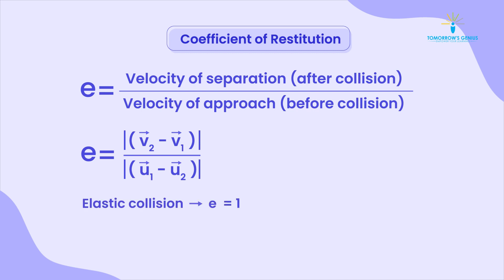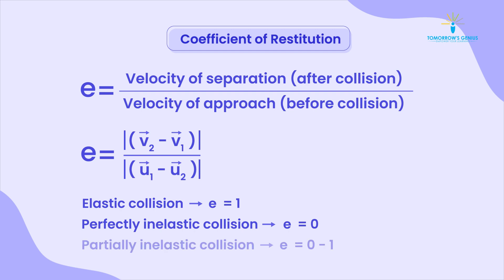The value of E for elastic collision is 1. For perfectly inelastic collision, it is 0. And for partially inelastic collision, it ranges between 0 and 1.